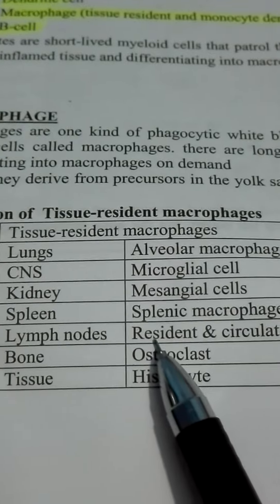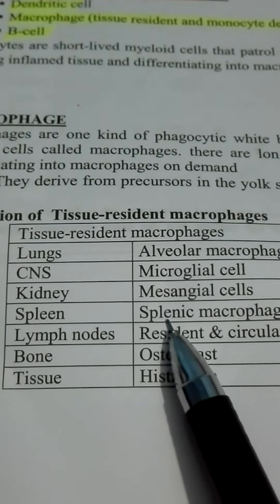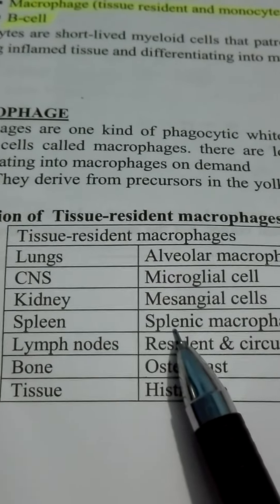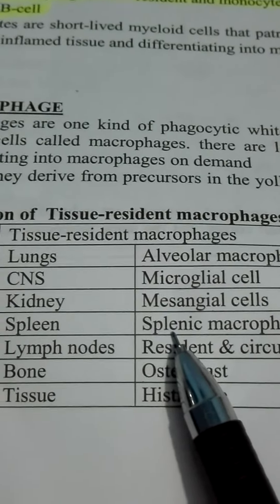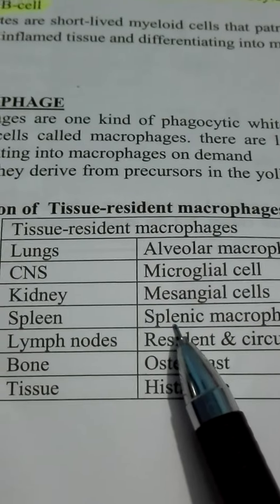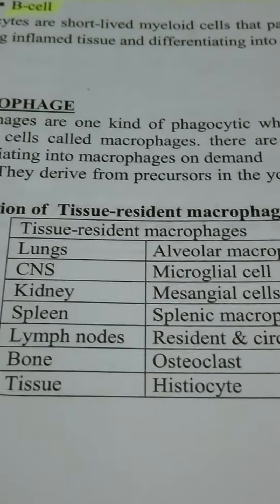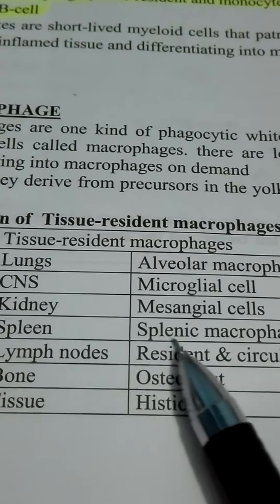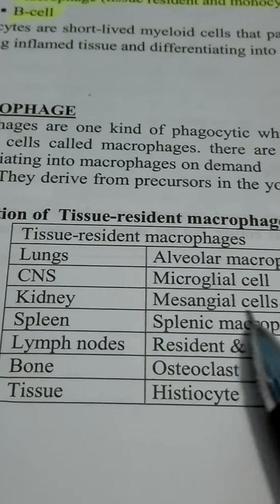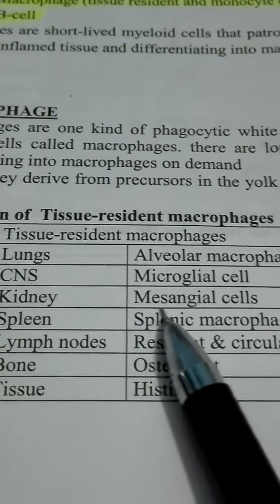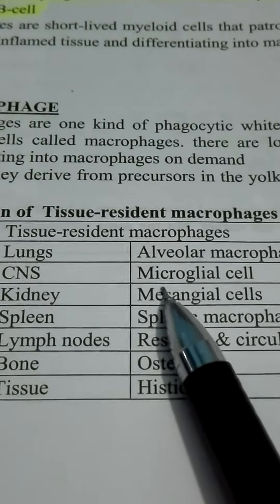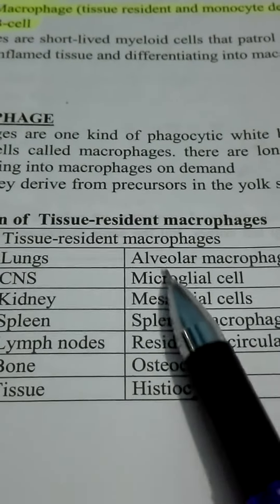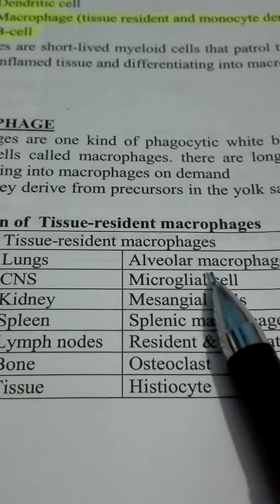The spleen has splenic macrophage or red pulp macrophage. When we study splenic circulation in anatomy, we understand this better. The kidney has the mesangial cell, which is different. In the central nervous system, there is the microglial cell, and in the lungs, the alveolar macrophage.